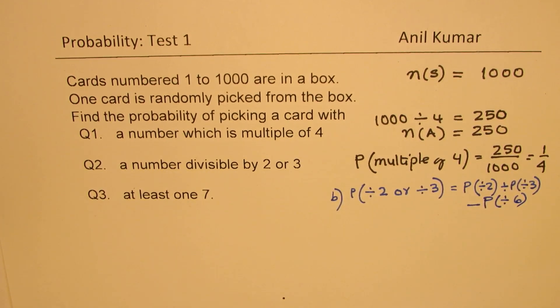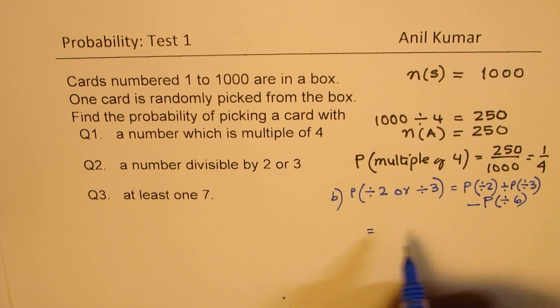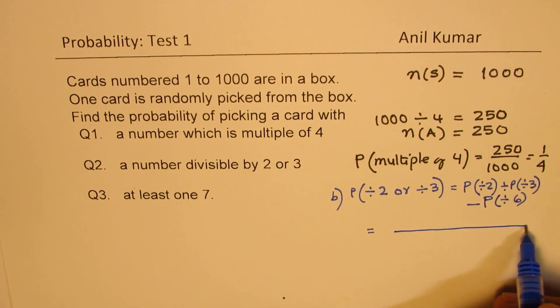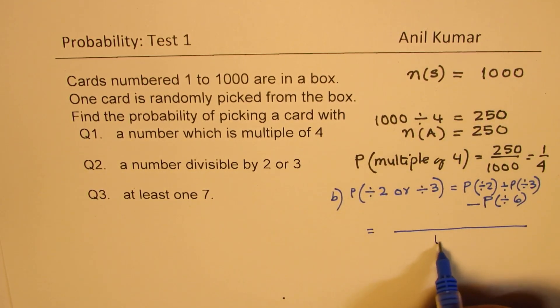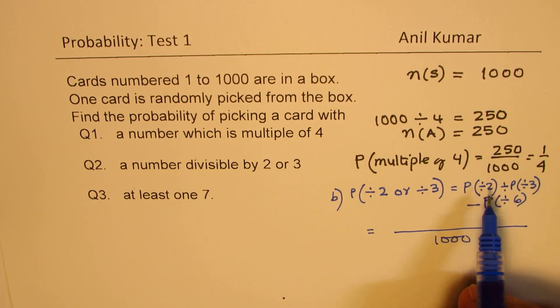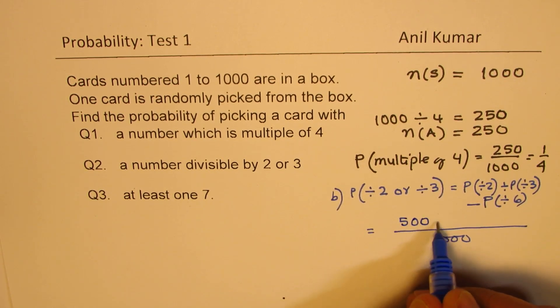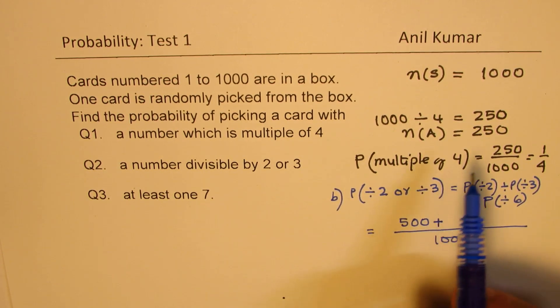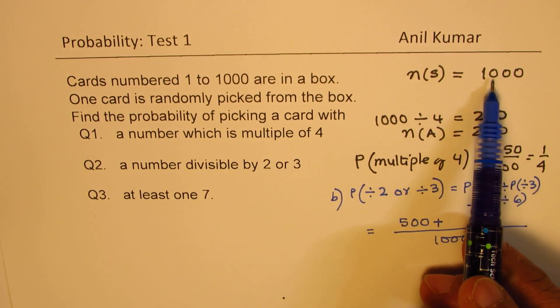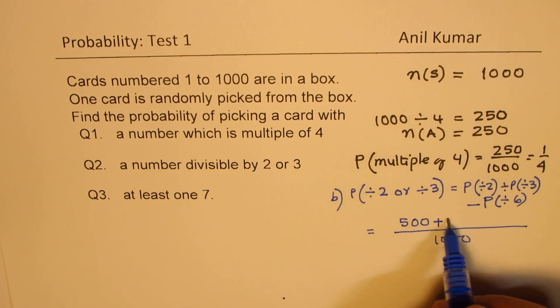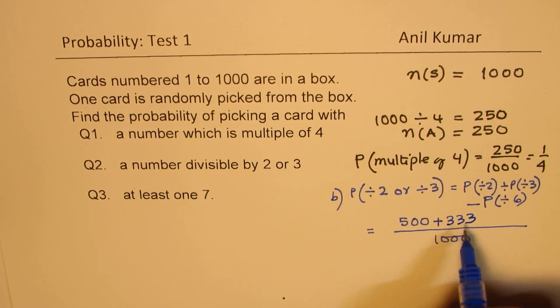Is that clear to you? So that is how you should be getting your answer. So we can write down that total, of course, is 1000. Out of these, the numbers which are divisible by 2 are half of these, which are 500. Plus numbers which are divisible by 3—so when you divide this by 3, you get 333.